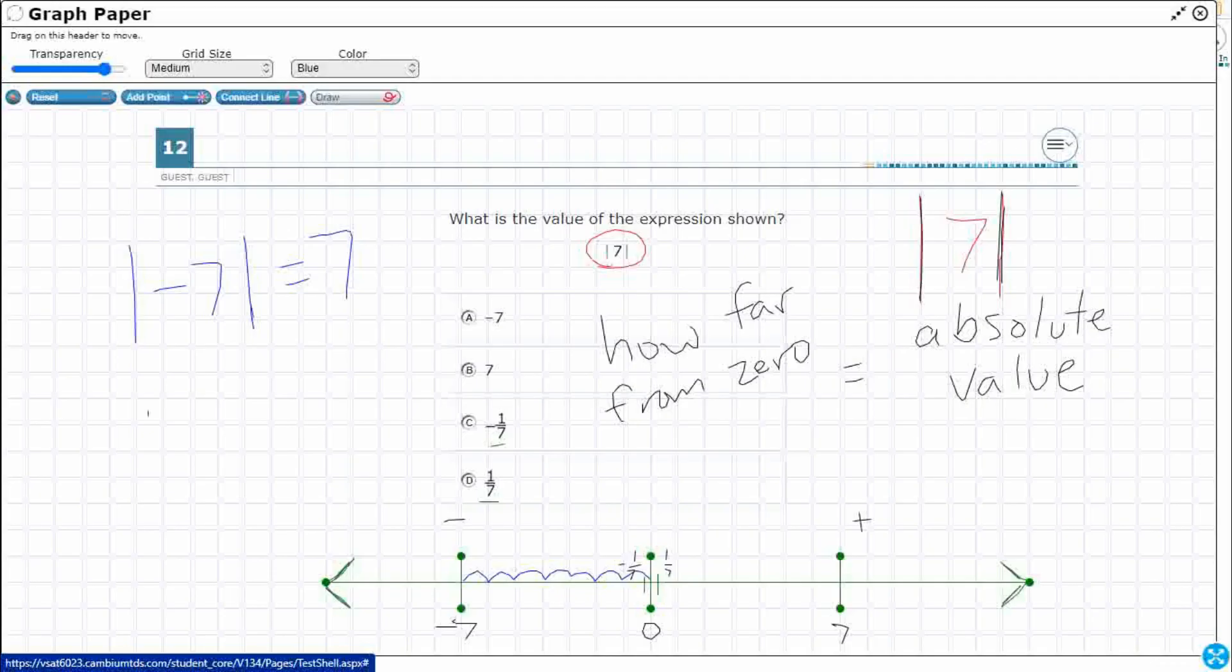Well, what happens if I do the absolute value of 7, right? Which is what we're looking at right here. Well, start at 7 and let's go to 0. 1, 2, 3, 4, 5, 6, 7. So both the absolute value of negative 7 and the absolute value of positive 7 are both the same thing, just 7 because it's only measuring how far away it is from 0.